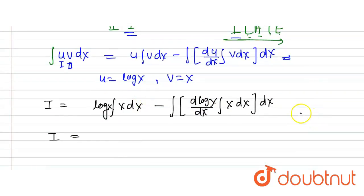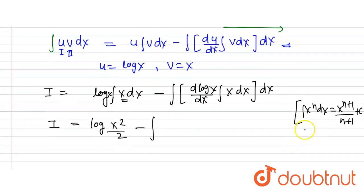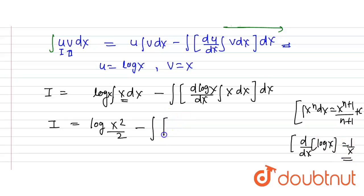We know the basic formula: ∫x^n dx = x^(n+1)/(n+1) + C. Here n = 1, so ∫x dx = x²/2. Also, the differentiation of log(x) is d/dx(log x) = 1/x. So we substitute: log(x)·(x²/2) minus the integral of (1/x)·(x²/2) dx.